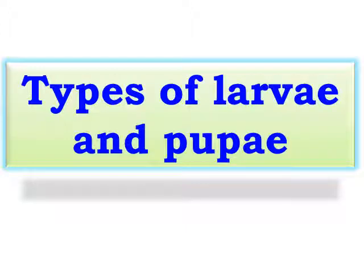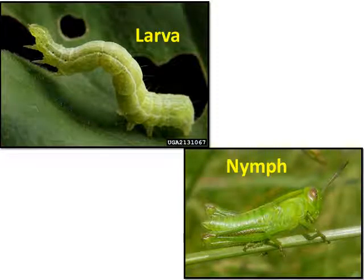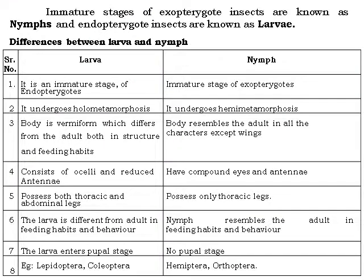Types of larvae and pupa: the larva is the immature stage of endopterygote insects. The difference is shown between the immature stage of incomplete metamorphosis and complete metamorphosis. In complete metamorphosis, the immature stage is known as larva, while in incomplete metamorphosis the immature stage is known as nymph. The immature stage of exopterygota insects is known as nymphs, whereas in endopterygota insects the immature stage is known as larvae.